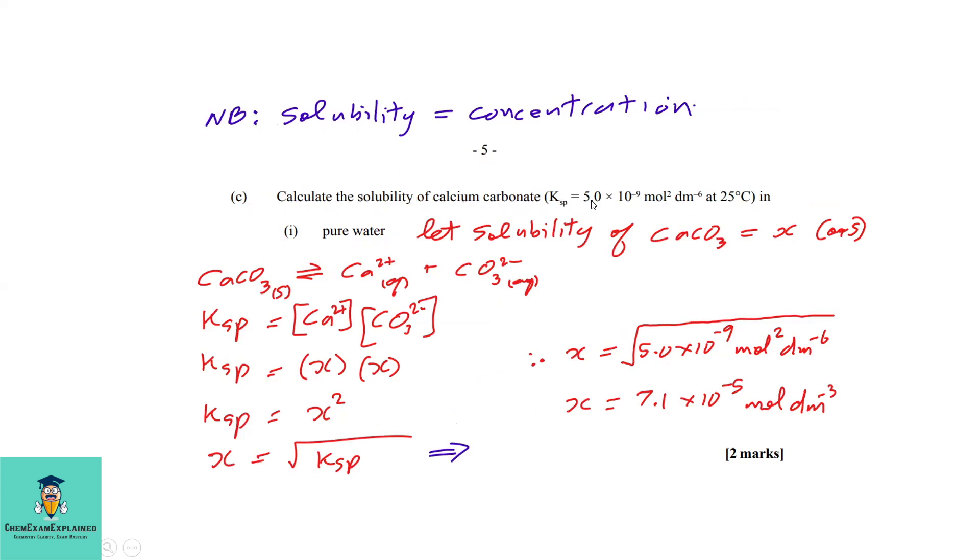Question 2c: Calculate the solubility of calcium carbonate given Ksp = 5.0 × 10⁻⁹ mol²/dm⁶ at 25°C in pure water. The first thing we're going to do is let the solubility of calcium carbonate equal x or s. I will be using the solubility to be equal to x.